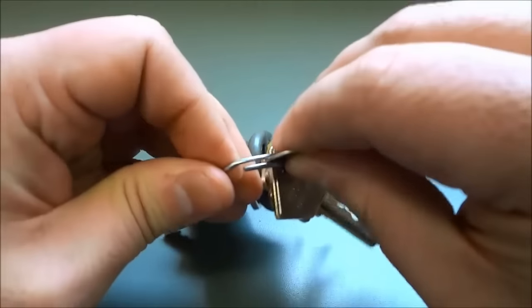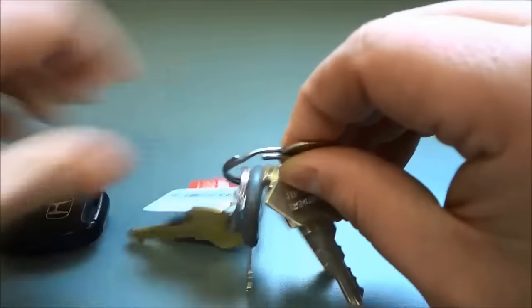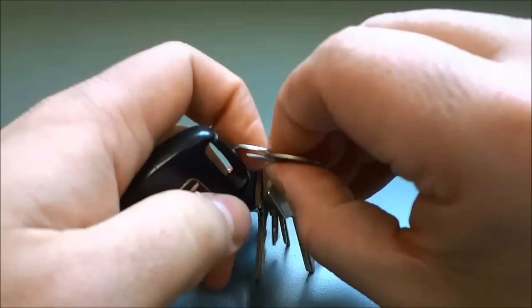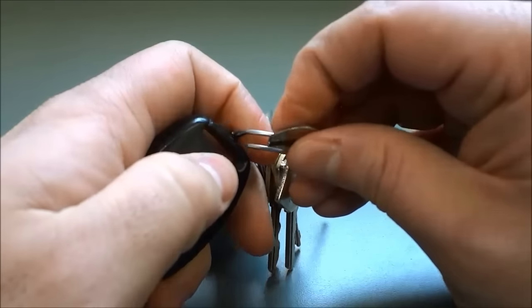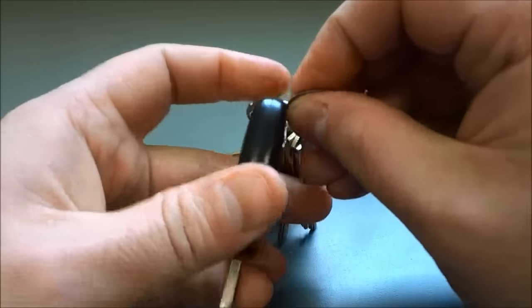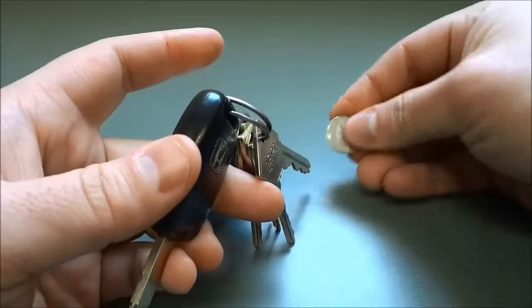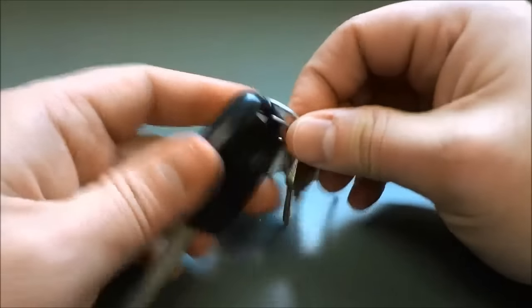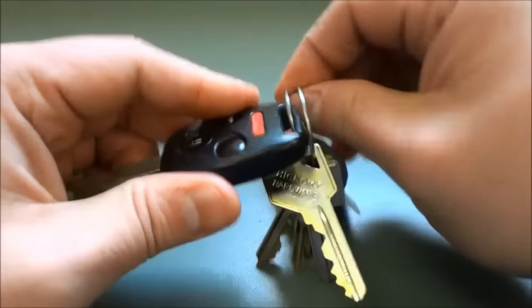So I'm going to twist it and open up the key ring and slide my car key into position. So I'm opening up the key ring just like that, sliding my car key in there and once your key is past that point you can take the coin and remove it and you can simply spin your key onto the key ring.